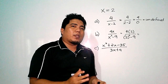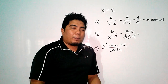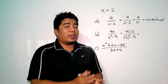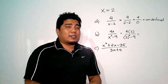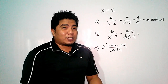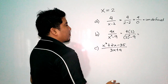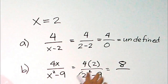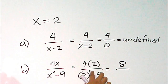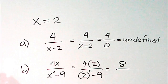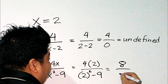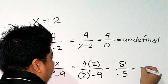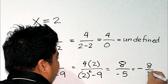Remember to always apply the order of operations — PEMDAS or GEMDAS. So 4 times 2 is 8. For the denominator, 2² is 4, and 4 minus 9 is negative 5. Therefore, our final answer is negative 8 over 5.